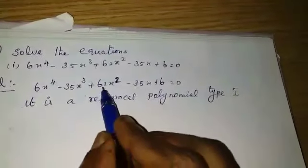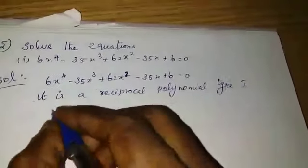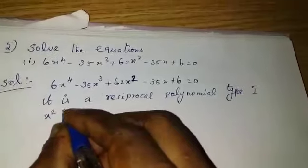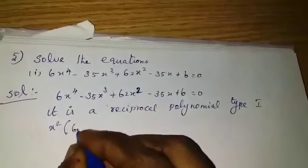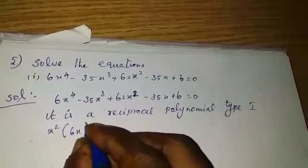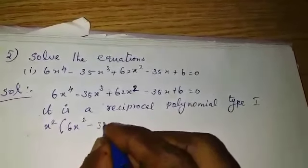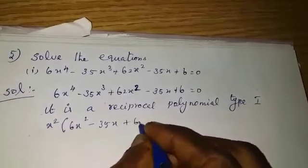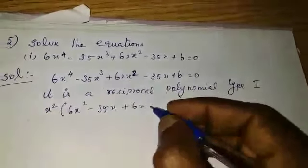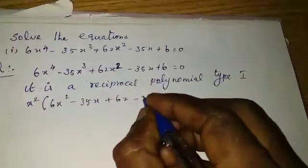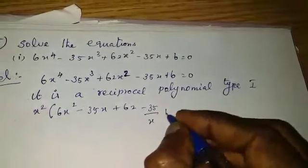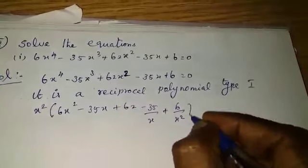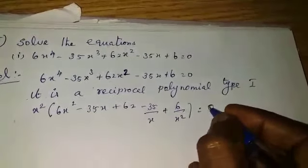The middle term is 62x². Take x² as common. Then we get 6x² minus 35x plus 62 minus 35 by x plus 6 by x² equal to 0.